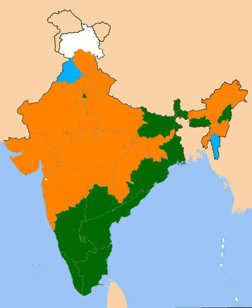In the Republic of India, a chief minister is the head of government of each of 29 states and two union territories — Delhi and Puducherry. According to the Constitution of India, at the state level, the governor is de jure head, but de facto executive authority rests with the chief minister.